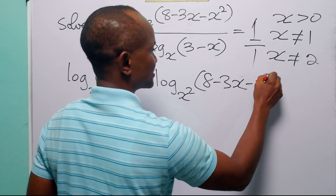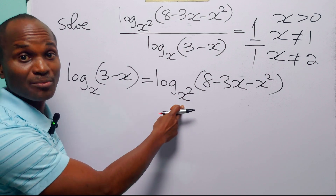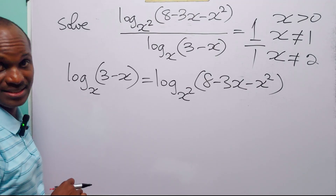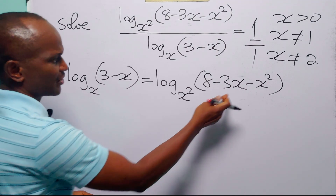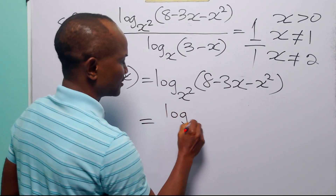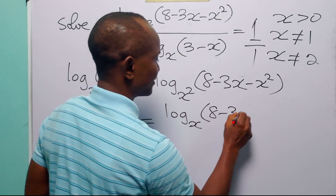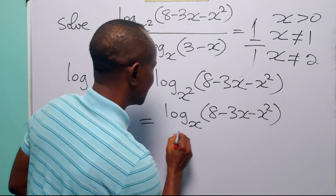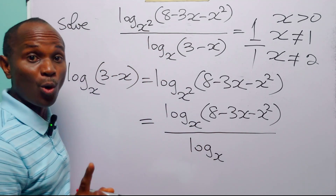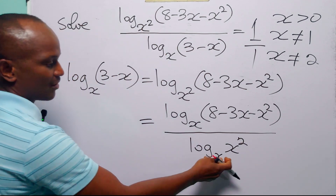The next thing we are going to do is change the base of the logarithm on the right-hand side from base x² to base x, to match the left-hand term. Applying the change of base formula, the right-hand side becomes log base x of (8 minus 3x minus x²) divided by log base x of x².